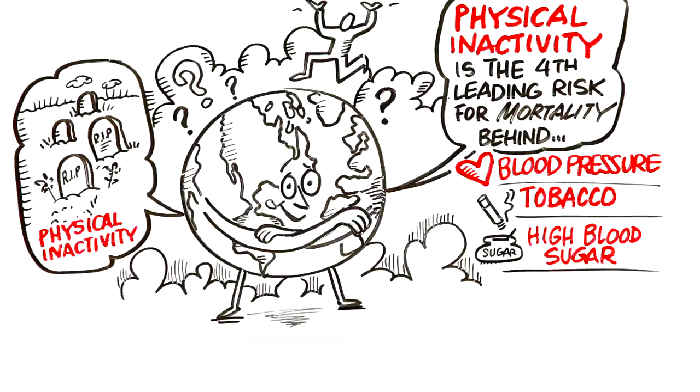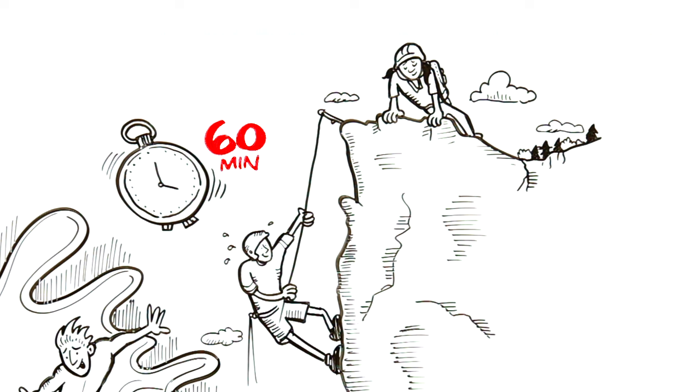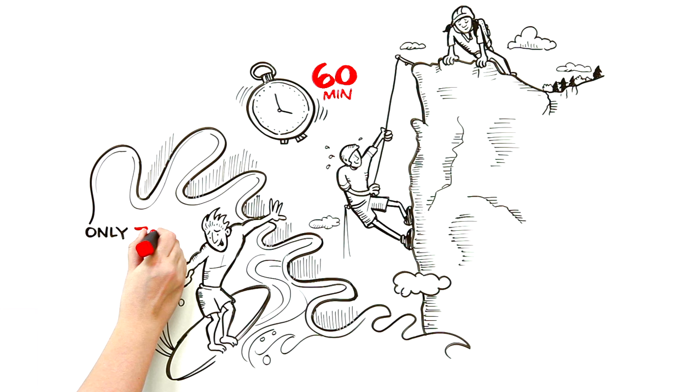Now, people aged 5 to 17 should accumulate 60 minutes of moderate to vigorous physical activity in a day. But currently, only 7% of youth are getting the recommended amount of physical activity.